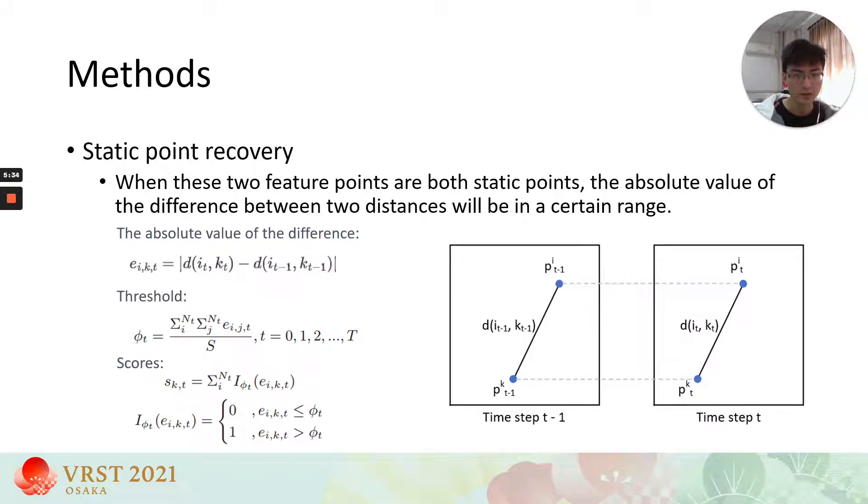If point k is a static point, the absolute value of the difference between distance at time step t-1 and distance at time step t will be lower than the threshold phi t. Phi t is the average value of all the static point pairs outside the box.